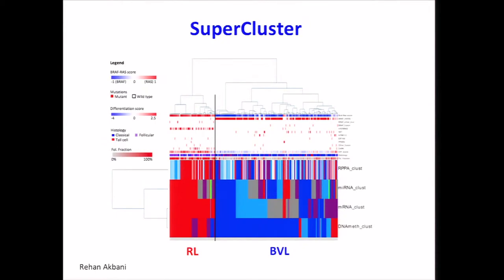Moving to the clustering, I'll show the supercluster rather than going through each platform. Across all platforms, there is a striking difference between RAS-driven tumors and BRAF V600-like driven tumors, confirming our big conclusion. There are histologic differences as well. What's interesting is a very robust cluster that matches across methylation, messenger RNA, and microRNA platforms — and it is enriched for tall cell tumors. We think there's a distinct cluster of tall cell tumors with distinct expression profiling.